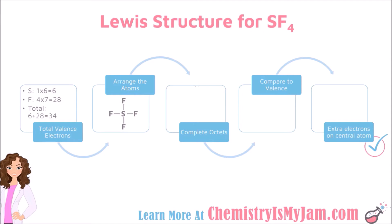Next, you want to arrange the atoms with the least prevalent atom in the middle. So, I have put sulfur in the middle with 4 fluorines around it.